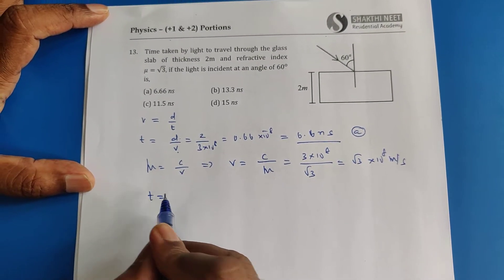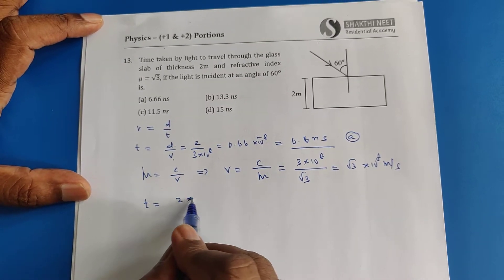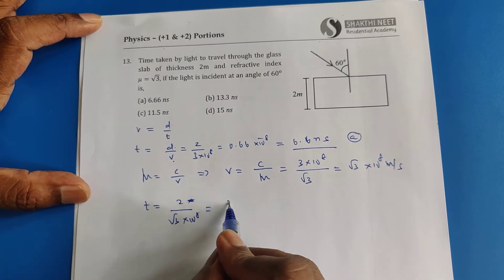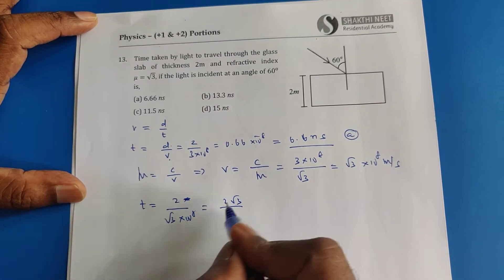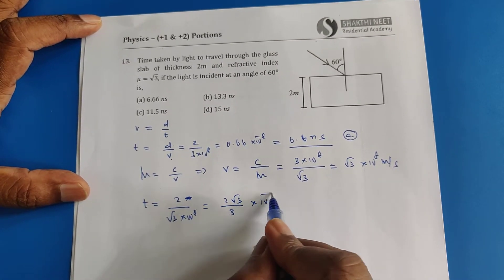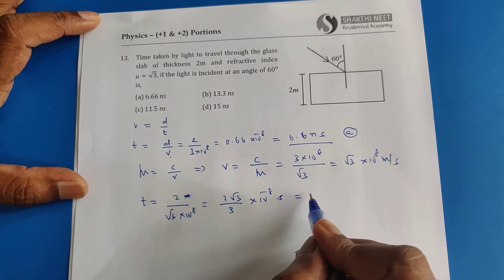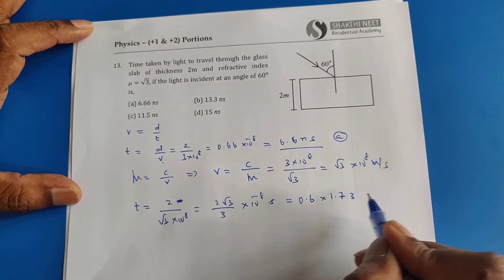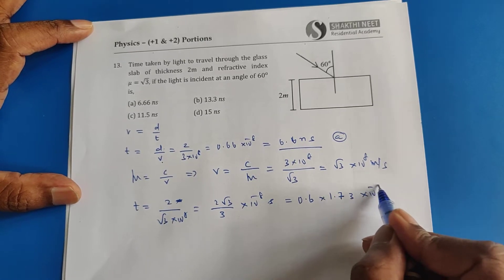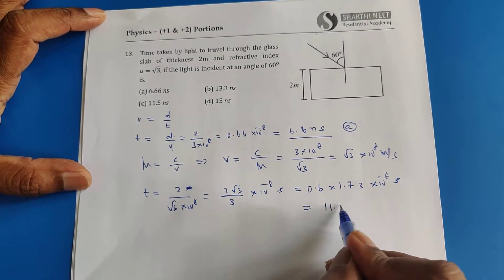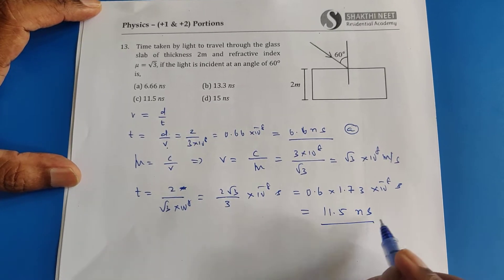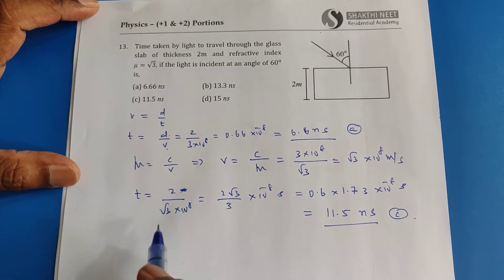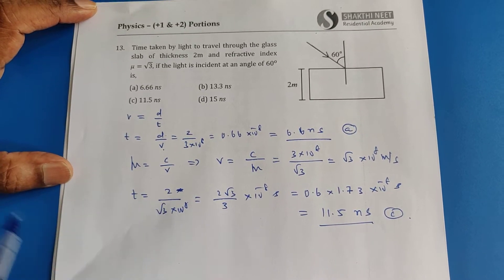Suppose time equals, if you substitute distance is 2 meters divided by the velocity root 3 into 10 power 8, what happens? 2 root 3 by 3 times 10 power minus 8 seconds. That is 0.66 and root 3 is 1.732 and you will get in this case 11.5 nanoseconds. This is another wrong option. Here what is wrong is the distance is wrong.